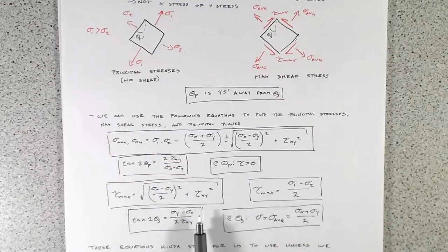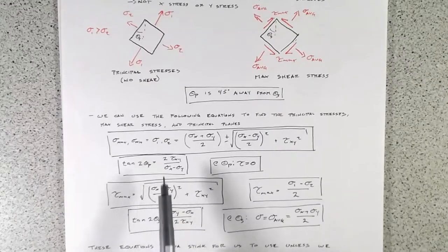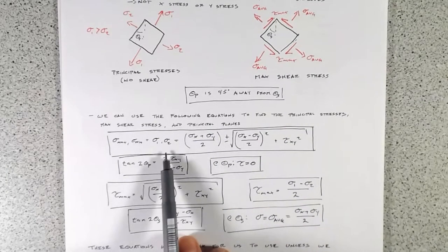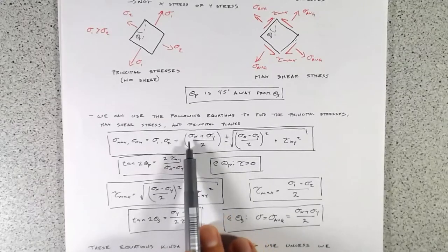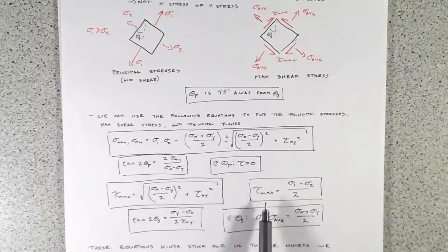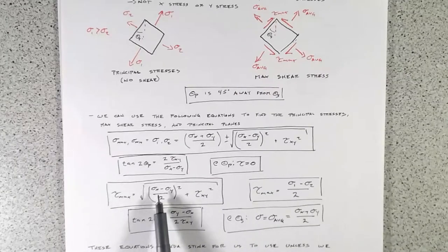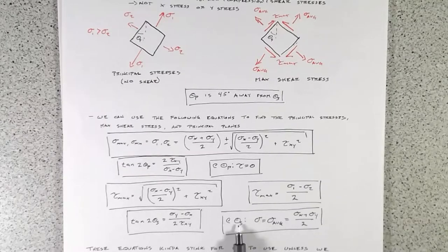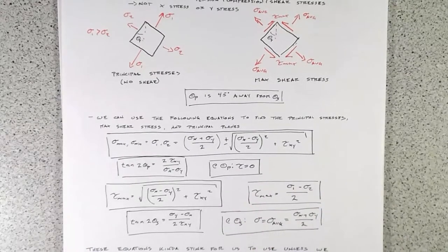We can work out our principal stresses with these equations and our maximum shear stresses with another. If we work through the math, we find that at our principal stresses, we have no shear stress. And for our maximum shear stress, if you compute sigma 1 minus sigma 2 divided by 2, that also equals tau max. At our maximum shear stress, the normal stress is just the average of sigma x and sigma y.